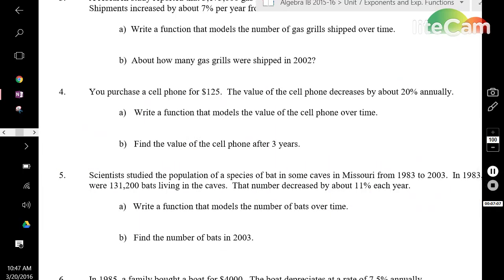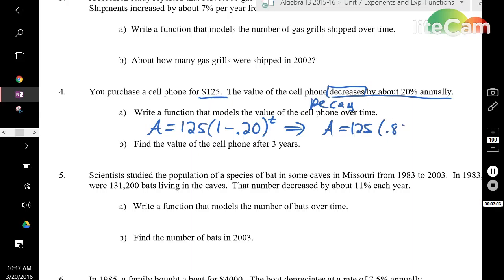We're going to do one more example here. Number 4 says you purchase a cell phone for $125. The value of the cell phone decreases by about 20% annually. We're looking at the word decreases here, which tells you right away decay. So it's not going to be 1 plus r in the parentheses, it's going to be 1 minus r. Write a function that models the value of the cell phone over time: A equals P, principal value is 125. Now it's going to be 1 minus r in the parentheses, so 1 minus 0.20. 20% is 0.20 to the power of t. Simplify that down: A equals 125 times 0.80 to the power of t.